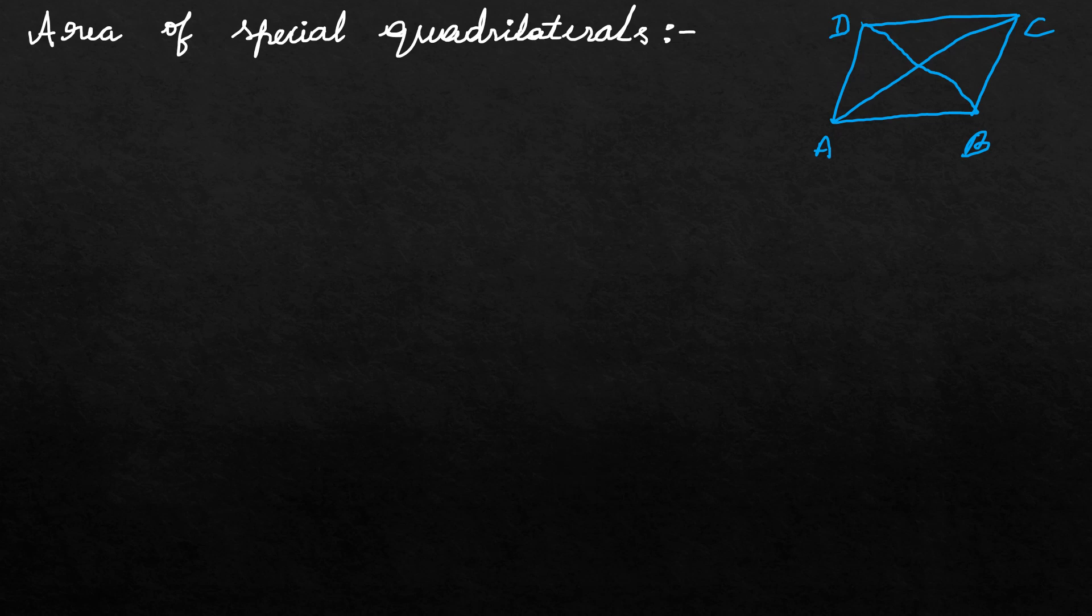What is rhombus? A quadrilateral all of whose sides have same length. Rhombus has all sides with the same length. All sides are same length, all is important.